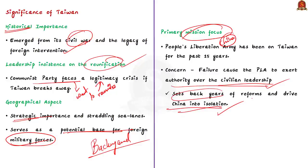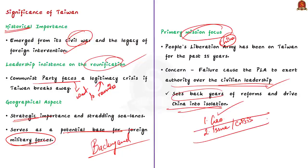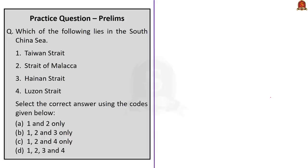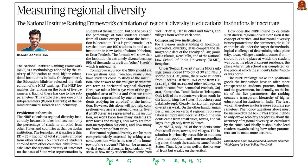To summarize the Taiwan discussion: we covered Taiwan's geography — which is relevant for map-based preliminary exam questions — and the three Taiwan crises. Keep this in mind as a potential world history topic as well.